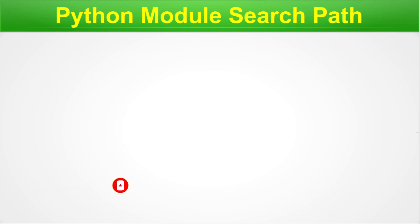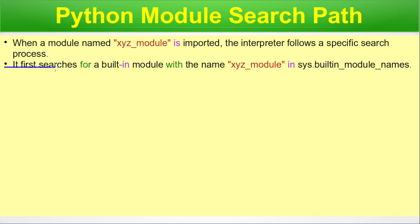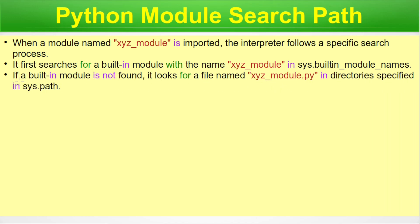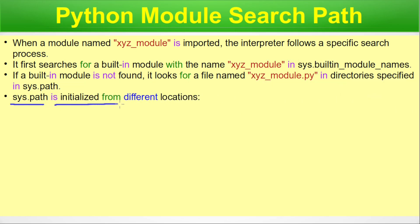Python module search path. When we have a module named xyz_module and we import it, the interpreter follows a specific search process. It first searches for a built-in module with the name xyz_module in the __builtin_module_name__ variable. If a built-in module is not found, it then looks for a file xyz_module.py in directories specified in sys.path — another Python internal variable.